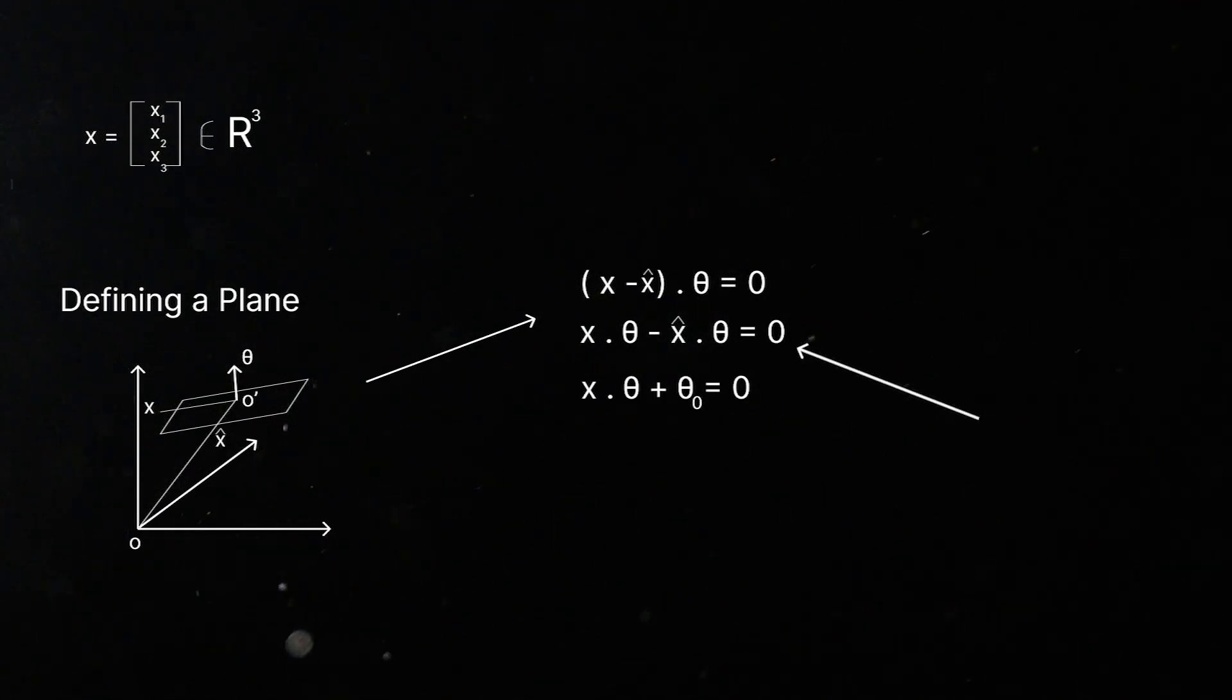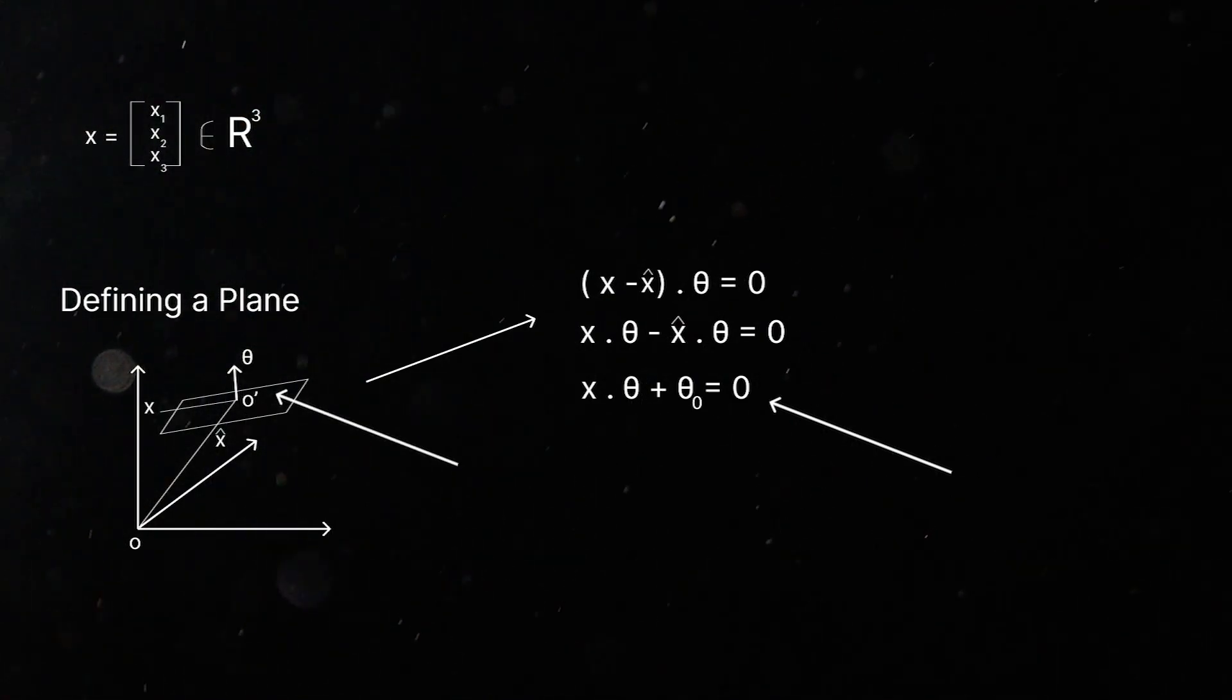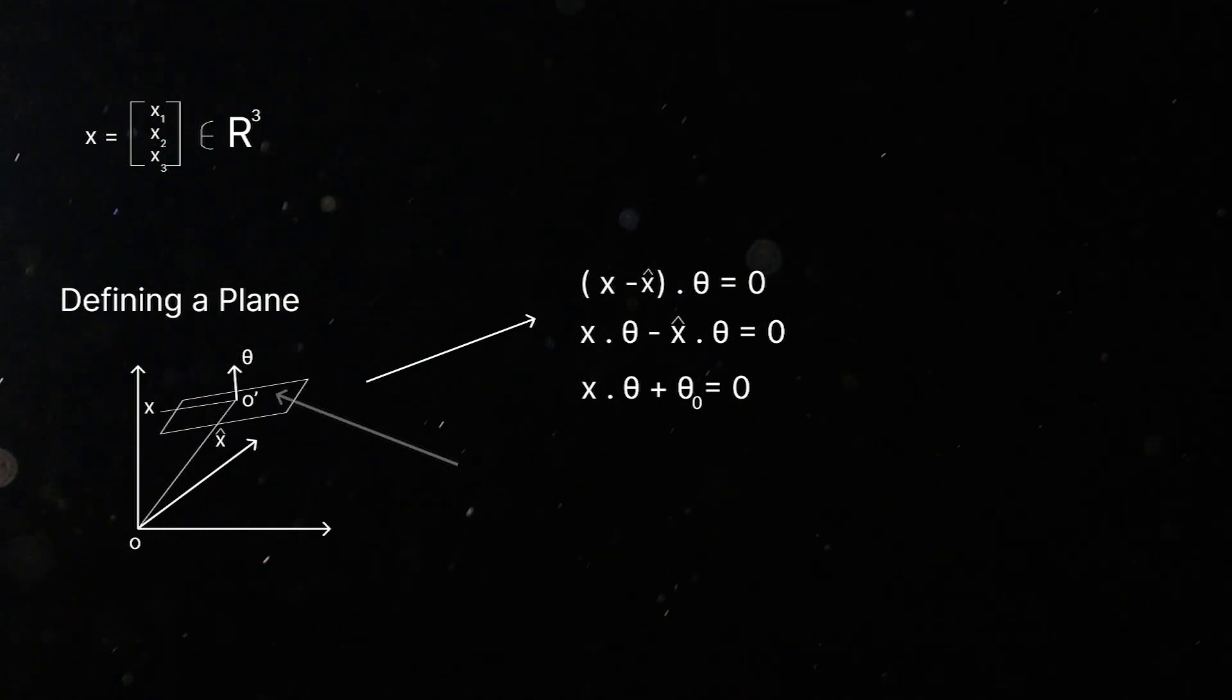So, x dot θ minus x̂ dot θ is equal to 0. This is always going to be constant. So, we can define our planes as all of the points which satisfy x dot θ plus some offset θ₀ is equal to 0, where these two are defined to be equivalent. And this is the definition of our plane. So, any point which satisfies this relationship, this linear relationship, lies on this plane.